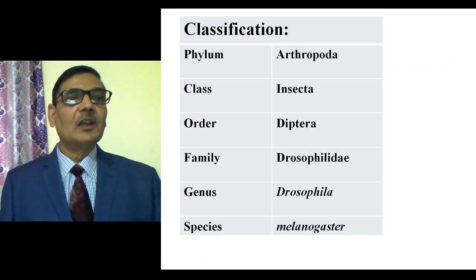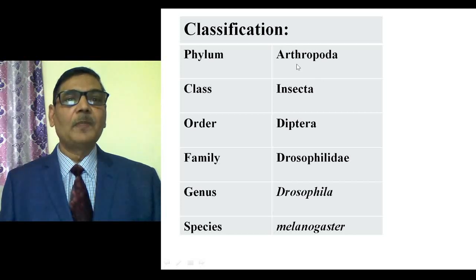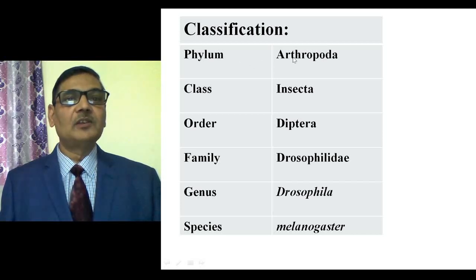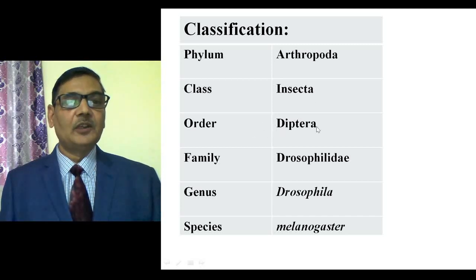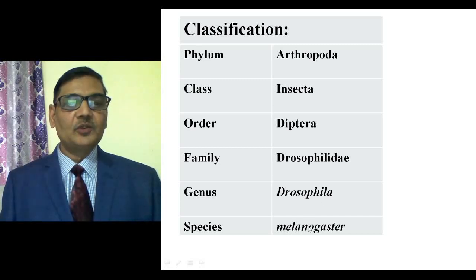Classifying this animal: its phylum is Arthropoda, the group which includes insects, crustaceans, arachnids, millipedes, and centipedes. Being an insect, Drosophila also comes under phylum Arthropoda. Its class is Insecta, order Diptera — one of the large orders under Insecta. Its family is Drosophilidae, genus is Drosophila, and the species most used for class studies and research is melanogaster.